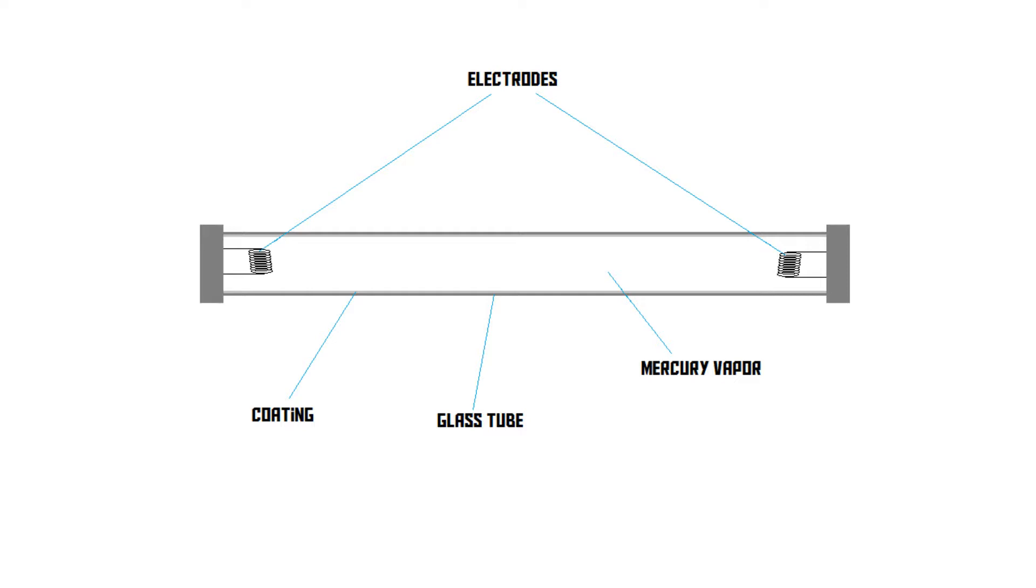The electrodes look like the filament of an old light bulb. Inside the glass tube there's a mixture of mercury vapor and an inert gas. Also, there's a special coating on the inside of the tube. More about that later on.